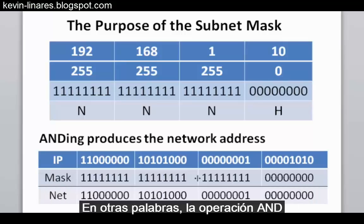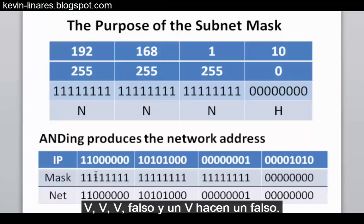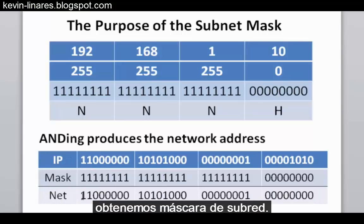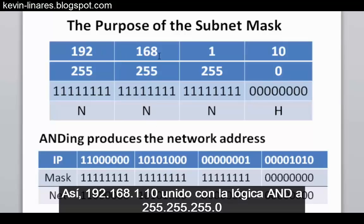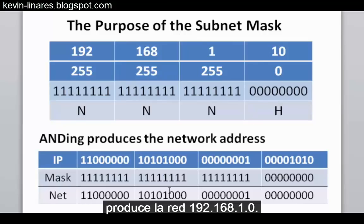This ANDing process is a logical process: a true AND a true makes a true; a false AND a true makes a false. If we logically AND the IP address with the subnet mask, we get the network address. So 192.168.1.10 logically ANDed with 255.255.255.0 produces the 192.168.1.0 network.